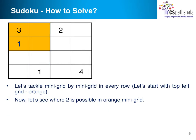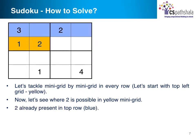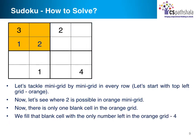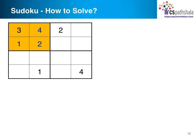What number should I try next? Let's take 2. Where can we place 2 in this mini grid? Can 2 be placed in the top row shown in blue? No — because 2 is already present in the top row. Therefore, the only possible place for 2 is the location shown in red. Now there is only one place left in the grid and we have only one number, 4, left. So let's put it in the empty place and the grid is complete.